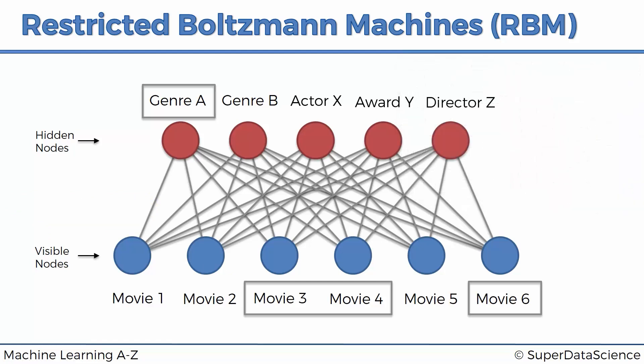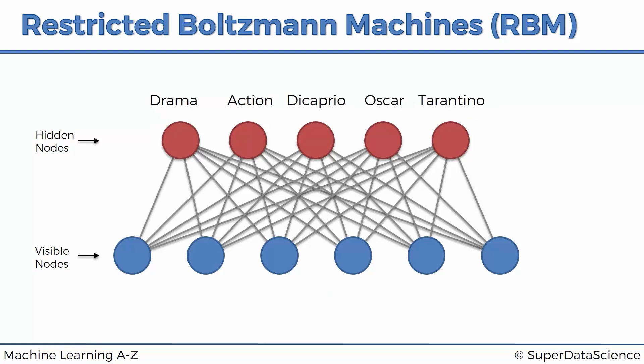Now let's look at how this plays out in action. Once the restricted Boltzmann machine is trained and knows about features and similarities, we're going to input a new row and see how it gives predictions. We've got six movies: The Matrix, Fight Club, Forrest Gump, Pulp Fiction, Titanic, and The Departed. The machine has identified five features: drama, action, DiCaprio as an actor, Oscar for best picture, and Quentin Tarantino as director.